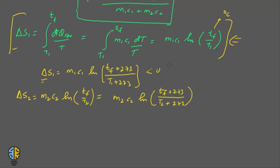ΔS1 is negative because Tf is less than t1, so we are taking the log of a number less than 1, which gives a negative value. ΔS2 is positive because Tf is greater than t2, so we are taking the log of a number greater than 1, which gives a positive value.